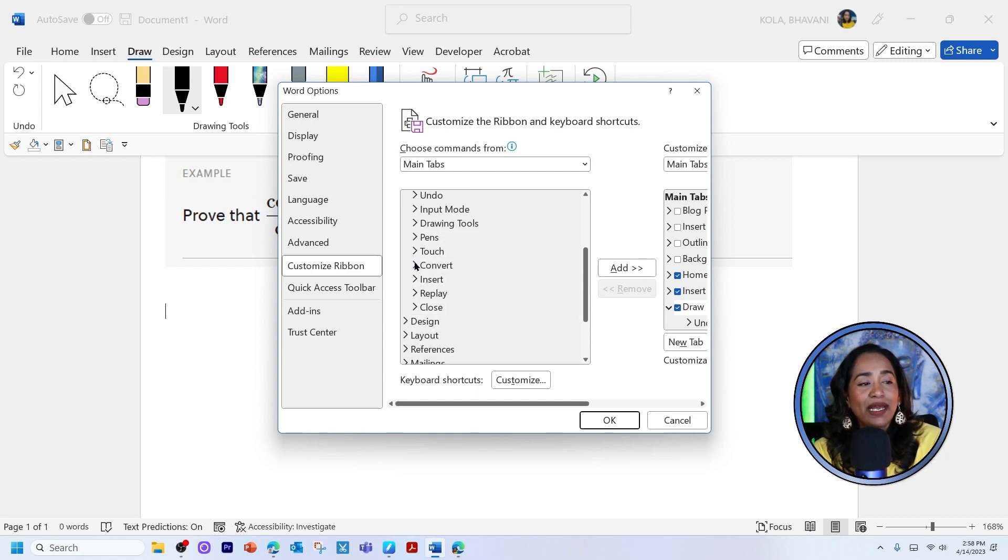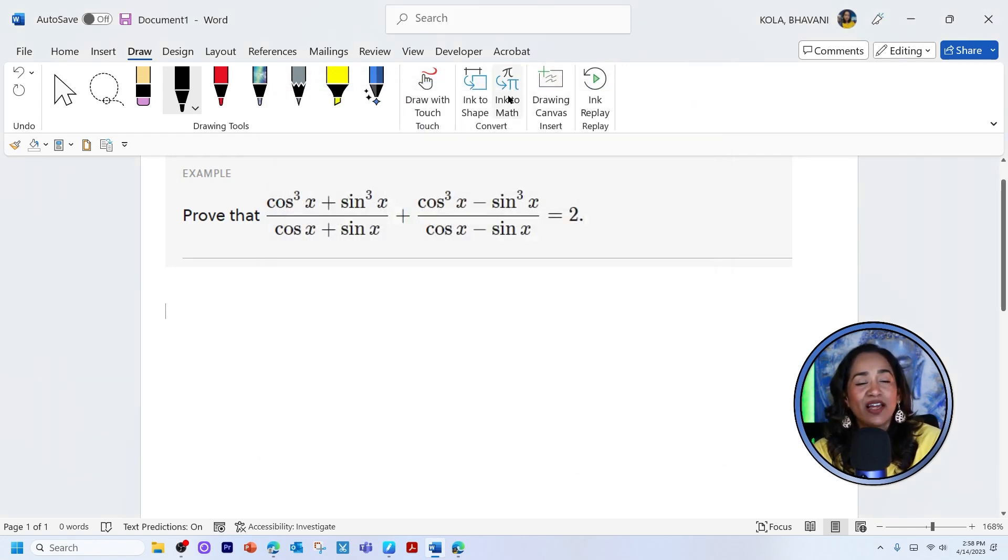Scroll all the way down until you find convert and go ahead, click on convert, make sure you have convert ink to math, add it, and then click okay. And once that's done, you will automatically see that feature all the way above in your draw tab.